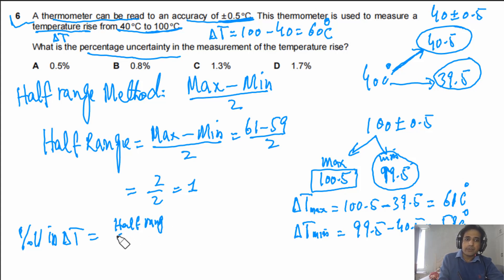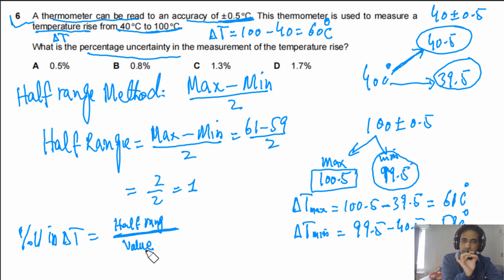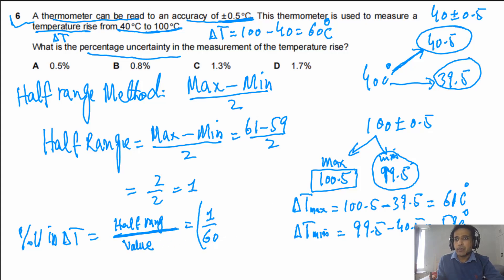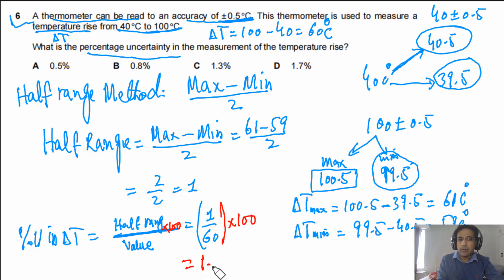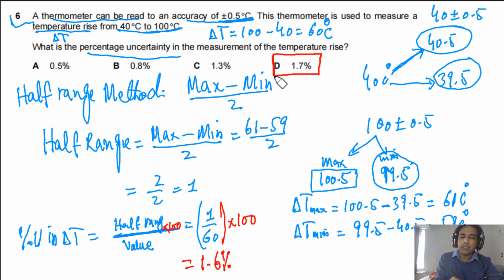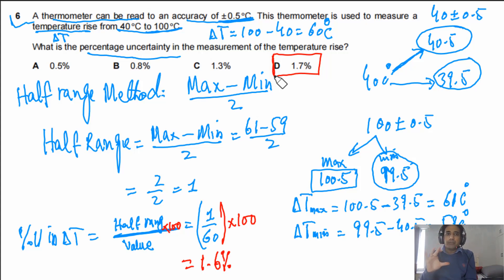Percentage uncertainty in delta T equals the half range divided by the value, multiplied by 100. Since we have just one reading, we use the single value rather than the mean. So: (1 divided by 60) times 100 gives approximately 1.6%. This means the answer is D. The half range method is very handy and can be used for any percentage uncertainty calculation.